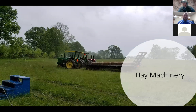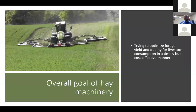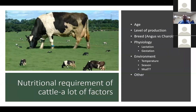Right off the bat, what are the goals of our hay machinery? Really, what we're trying to do with hay machinery is to optimize forage yield and quality for livestock consumption in a timely, cost-effective fashion. So we're trying to achieve yield and quality, but we have to take other considerations into account as well — one of them being the nutritional requirements of cattle or whatever livestock it may be.